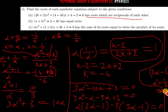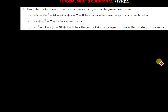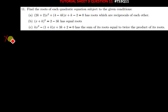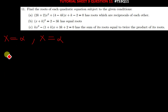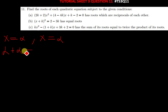We now move on to part B. Part B says the equation has equal roots, meaning after solving the quadratic equation you get the same answers — if your x equals alpha, your other x will also be alpha. There are many ways to solve this; we can use the same method or the discriminant. Using our formula, adding alpha and alpha gives negative B over A.